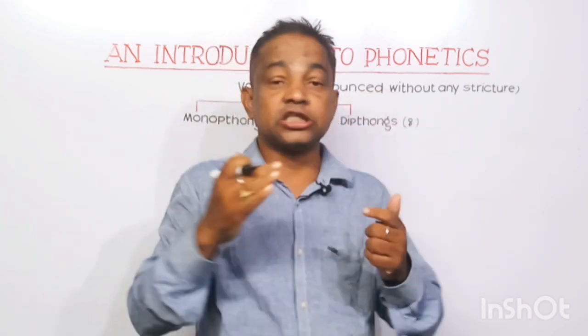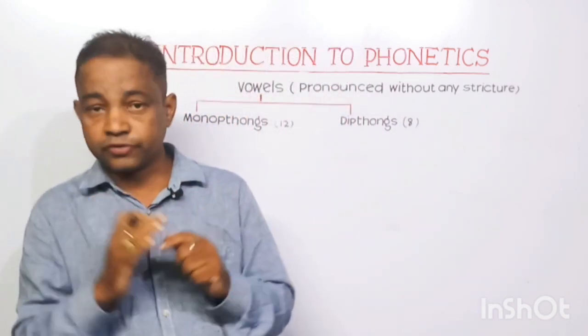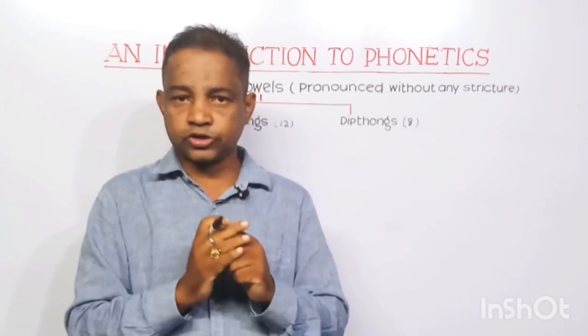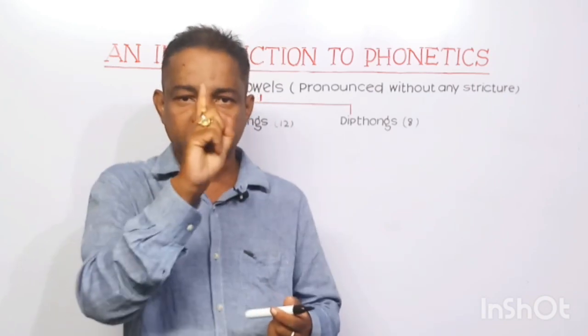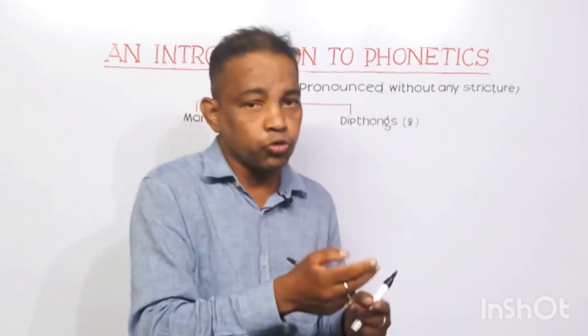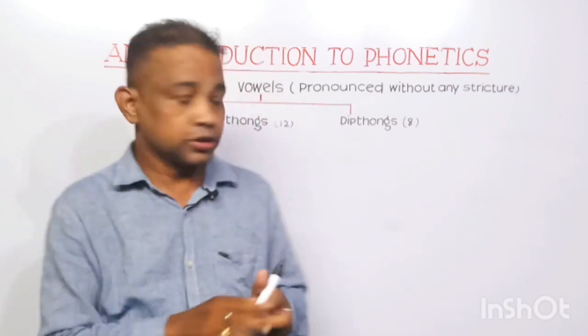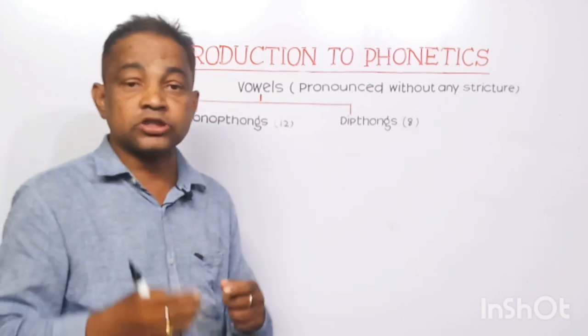Let us discuss vowels. What do you mean by vowels? Patanjali says: 'Shwayan Rajan Titi Swaraha' — that means vowels are pronounced without any obstruction; they are self-sounding. There are two types: monophthongs and diphthongs. Monophthongs are 12 in number and diphthongs are 8. Mono means one, single; thong means sound — monophthongs never change their quality, they have only a single sound. Diphthong means di plus thong — di means two, thong means sound. A diphthong is the union of two monophthongs or two pure vowels. So monophthongs are called pure vowels or stable vowels.